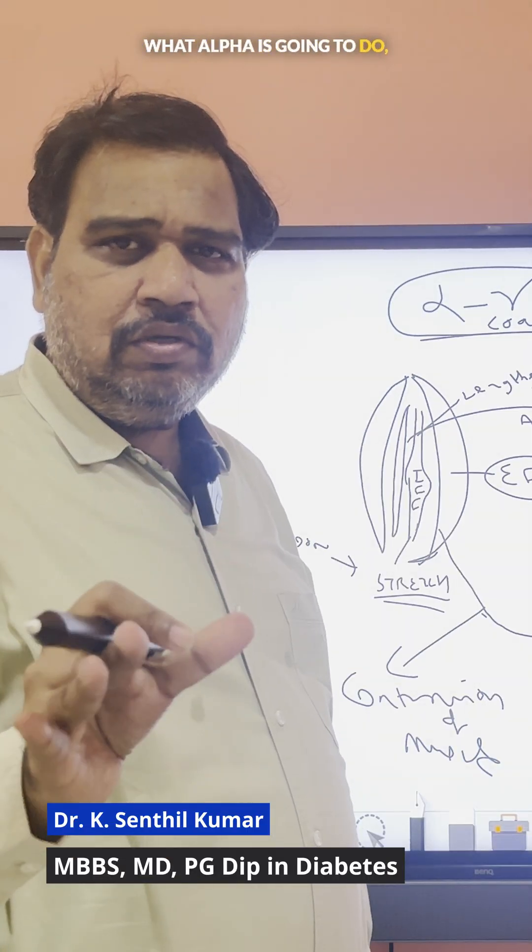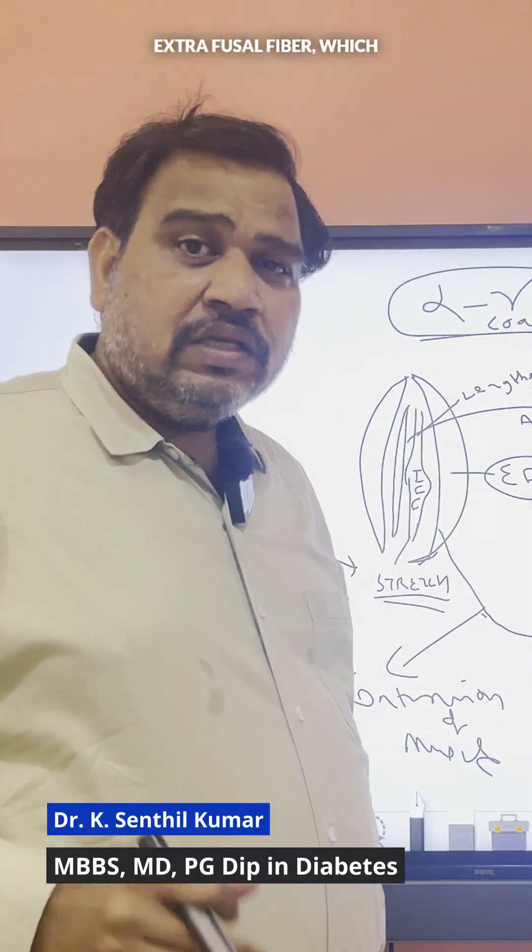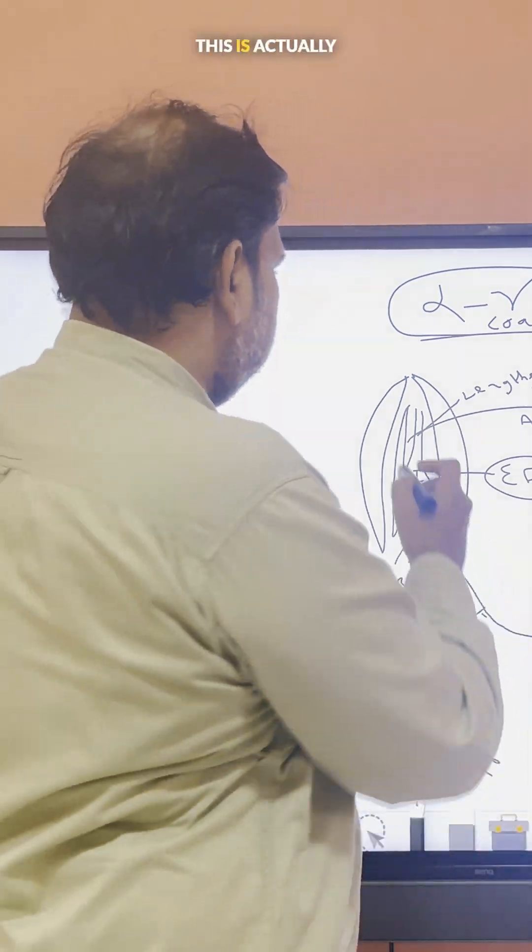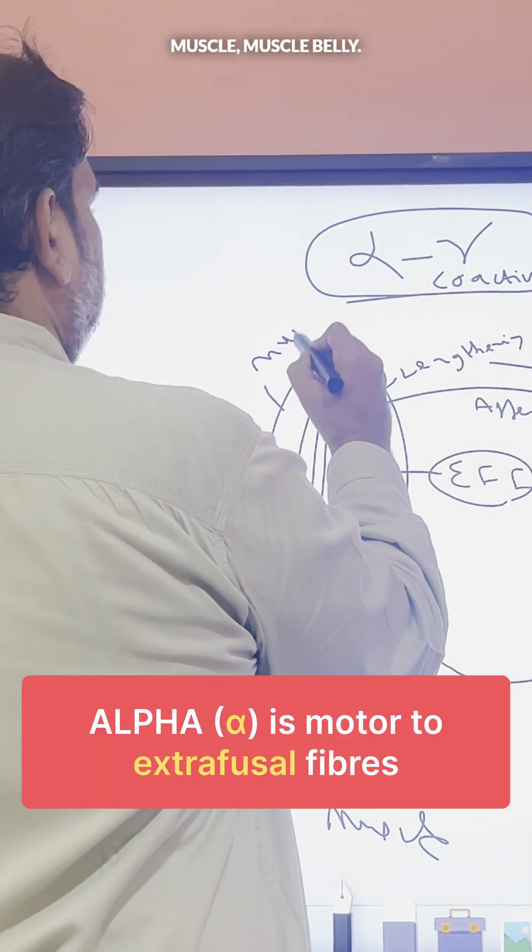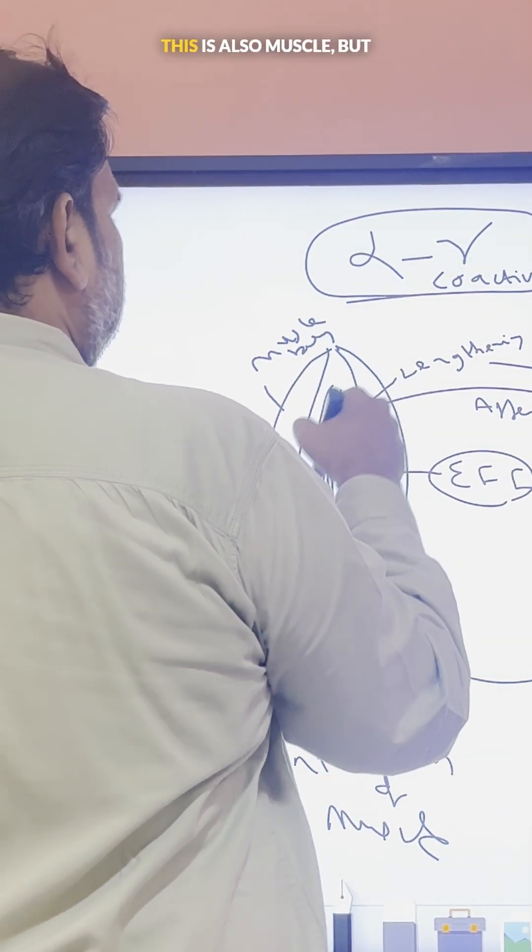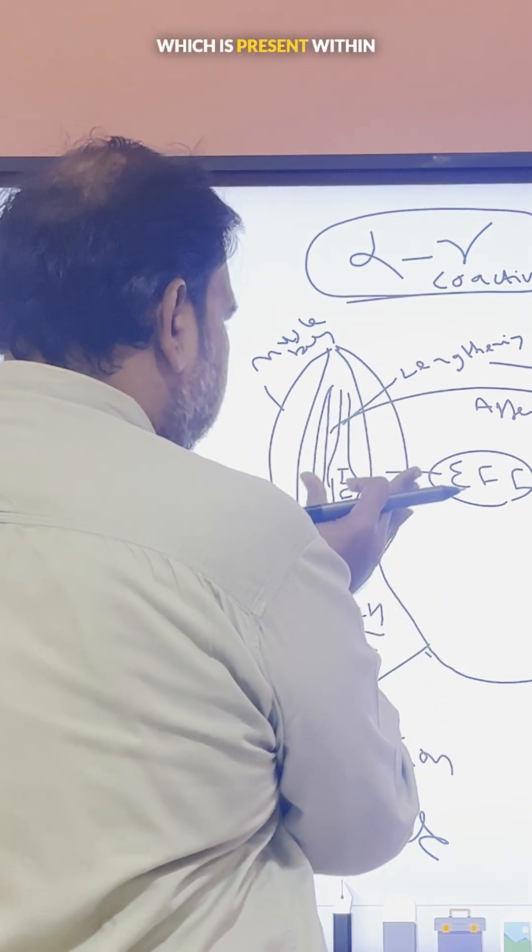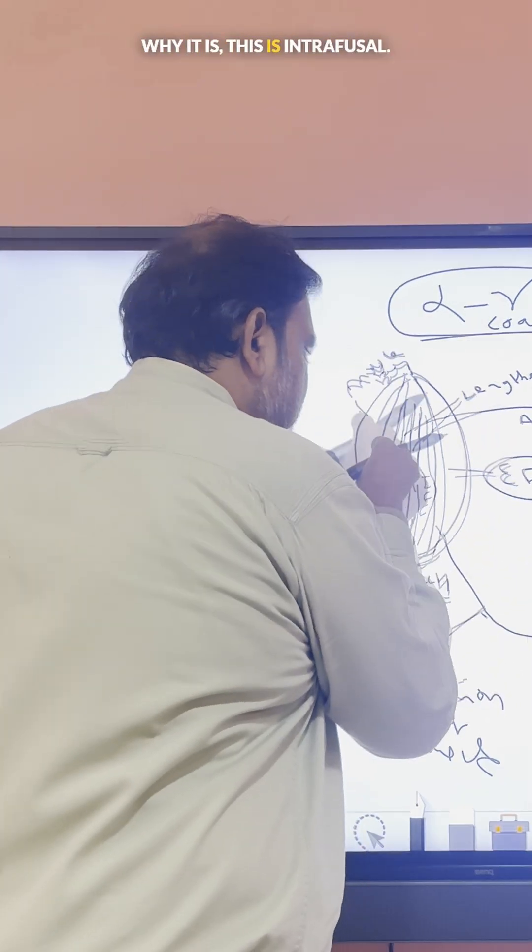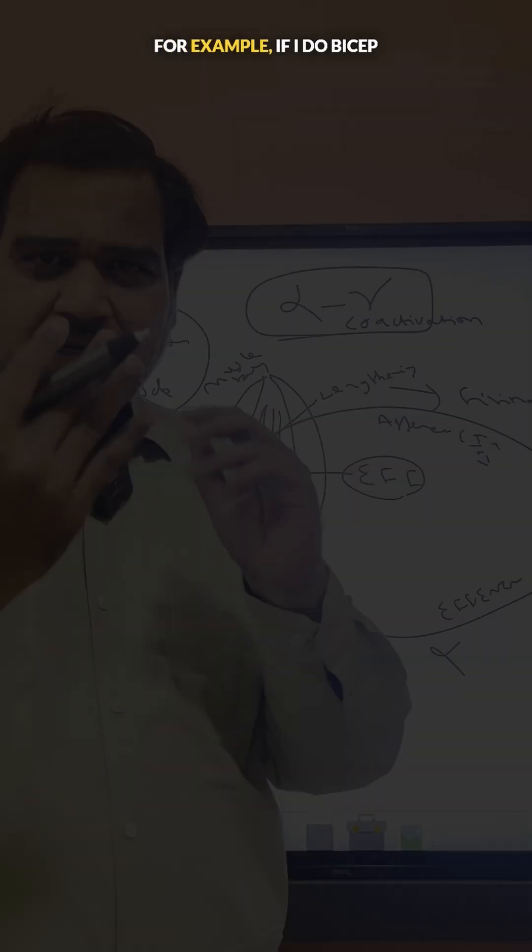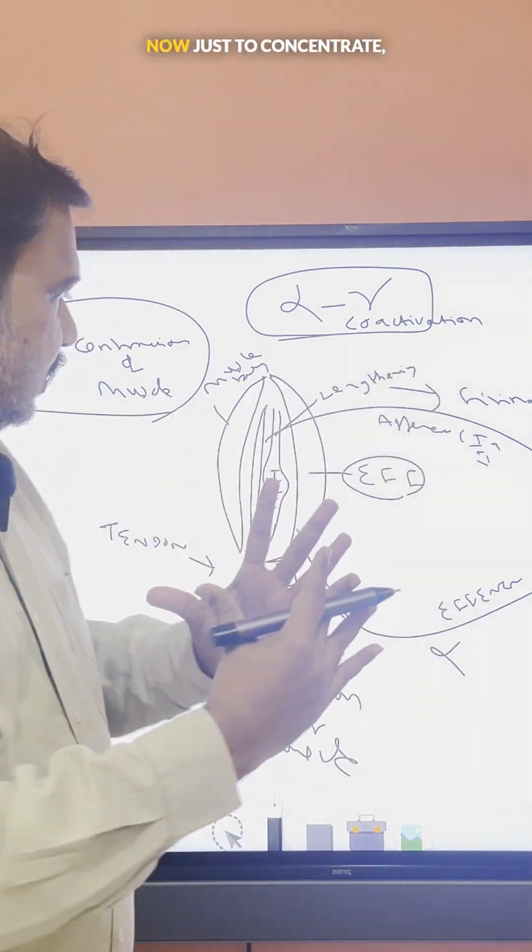Please understand what alpha is going to do, which is the output to extrafusal fibers, which is nothing but muscle. This is actually muscle, the muscle belly. This is also muscle, but it is present within the extrafusal. That is why this is intrafusal, this is extrafusal. For example, if I do a bicep jerk, the biceps is contracting now.